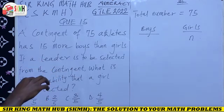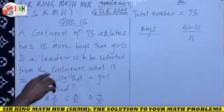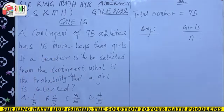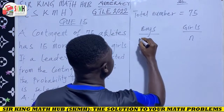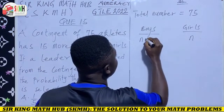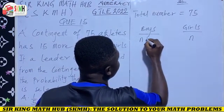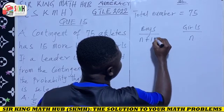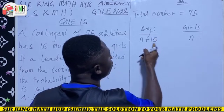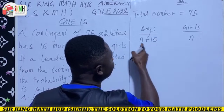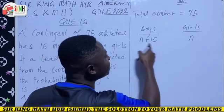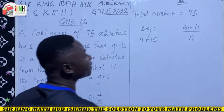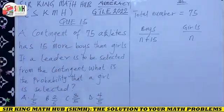How do we write 15 more boys than the number of girls? It means there are 15 more boys than girls, so the number of boys is n plus 15.